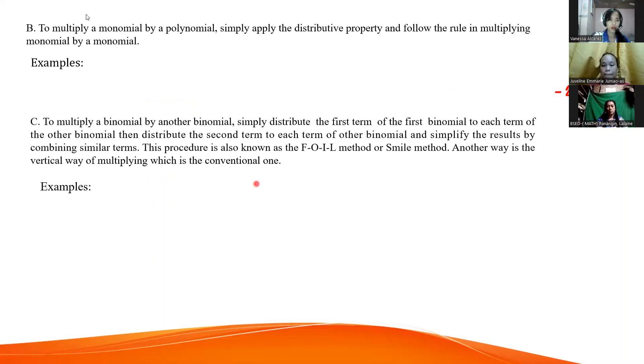To multiply a monomial by a polynomial, simply apply the distributive property and follow the rule in multiplying monomial by a monomial. First, distribute. Very good. Then follow the rule we did earlier. Now, 3x times x squared minus 5x plus 7. The monomial is 3x, and the polynomial is x squared minus 5x plus 7.